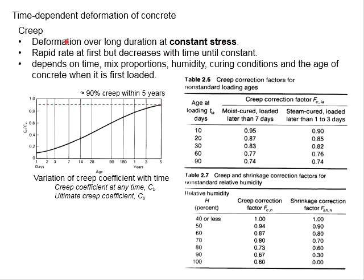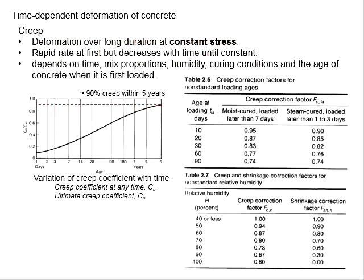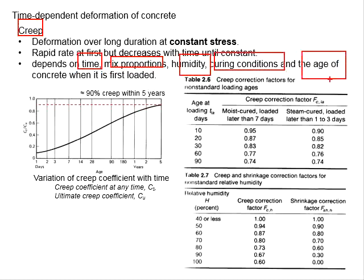The development rate of creep is faster at first, but decreases with time until constant. The development of creep is dependent on the time, mix proportions, humidity, curing conditions, and the age of concrete when it is first loaded.